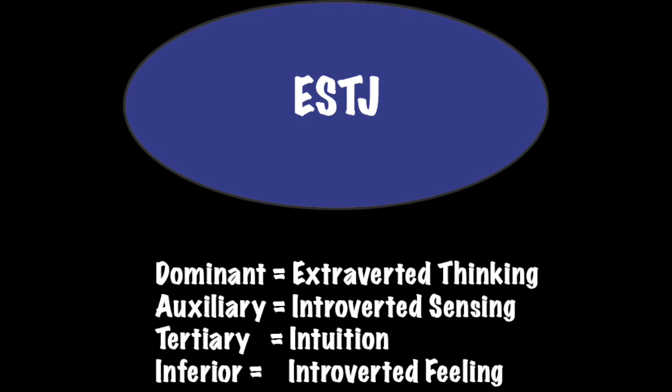So, an ESTJ is better understood as a dominant extroverted thinker, with auxiliary introverted sensing, tertiary intuition, and inferior introverted feeling.